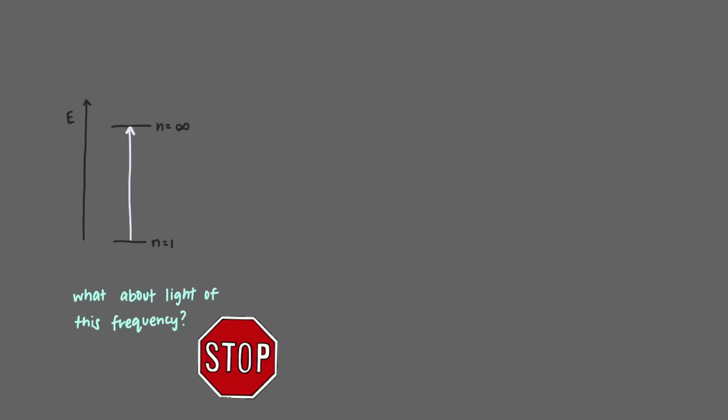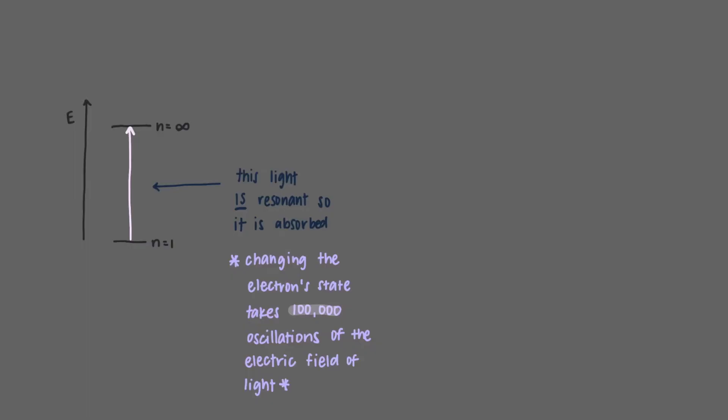What about light of this frequency? Since this light is resonant with a change in the electron's state, it will be absorbed. Which, as we saw in a previous lesson, takes about 100,000 oscillations of the electric field of the light.